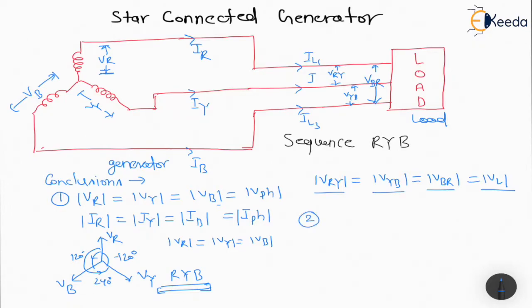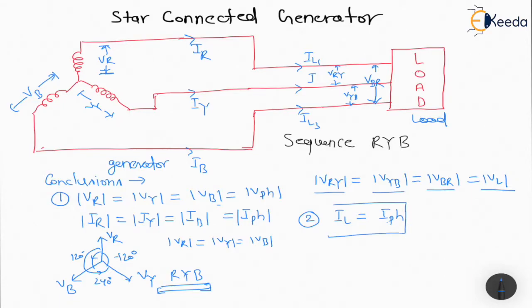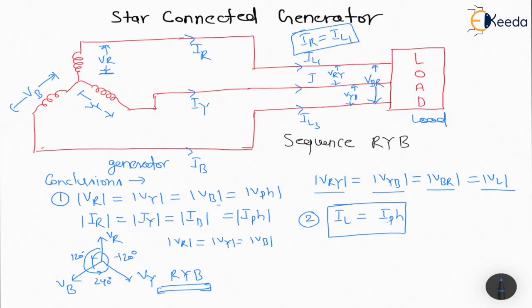The second point: we can see that IL = Iph. In the case of star connection, the value of line current will be equal to the value of phase current — you must remember this point. The line current IL1 will be equal to IR, so IR = IL1, meaning phase current equals line current for the star connected generator.